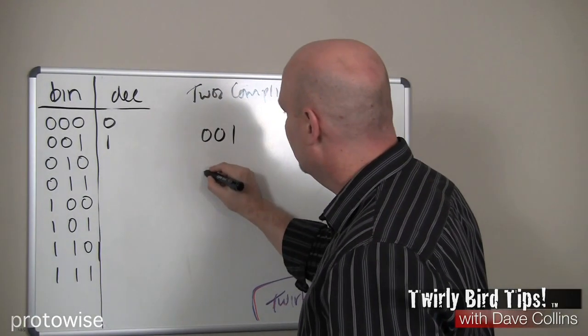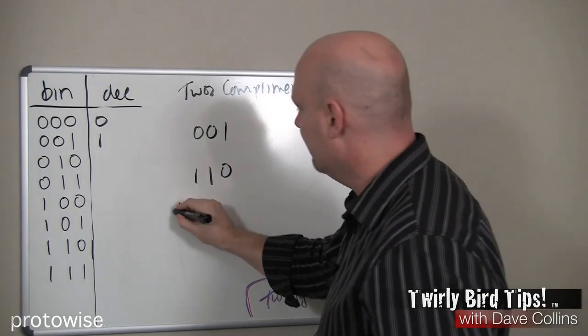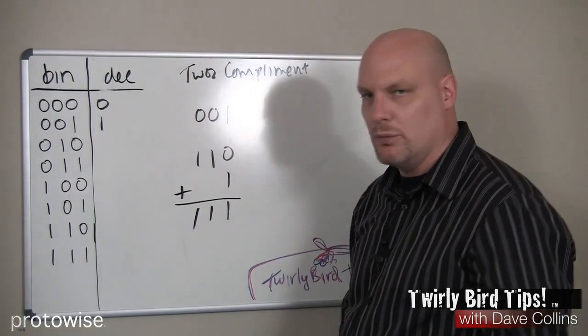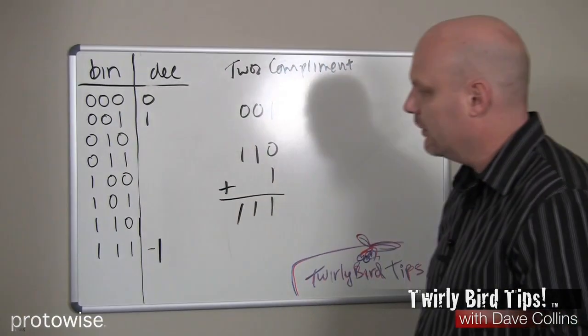We would flip the bits, making it 1, 1, 0, and then add 1. So 1, 1, 1. There's our 1, 1, 1, and that would be our negative 1.